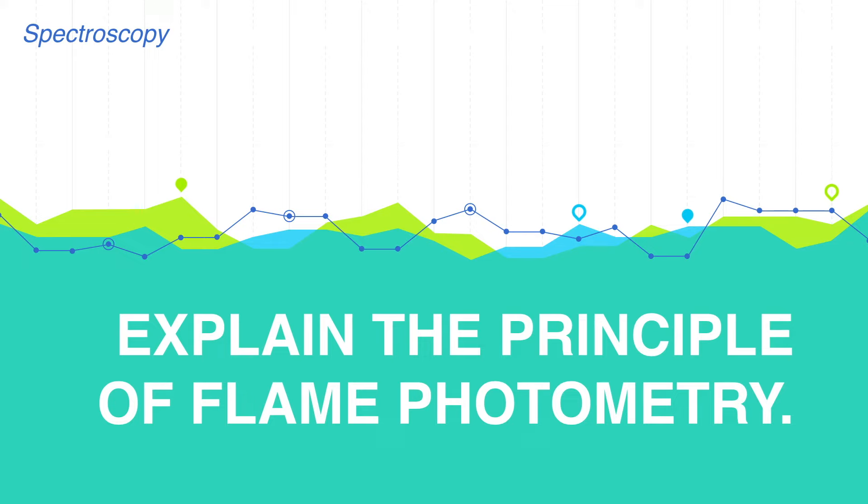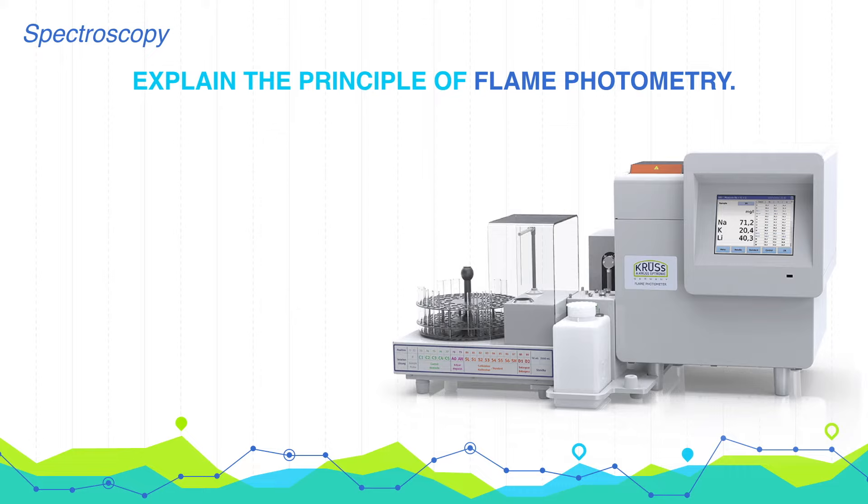Explain the principle of flame photometry. Whenever any sample salt solution is introduced into a flame, the solvent is vaporized, leaving behind tiny particles of solute solid molecules.